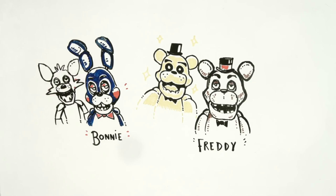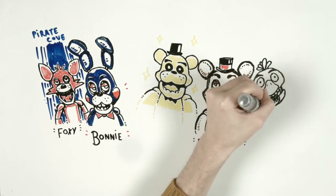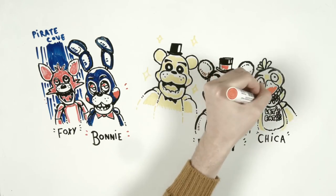Foxy is an animatronic pirate fox that hides behind the curtain. He will try to attack you and do horrible things to you. And finally, Chica. She is a bright yellow bird that will annoy you the whole night.